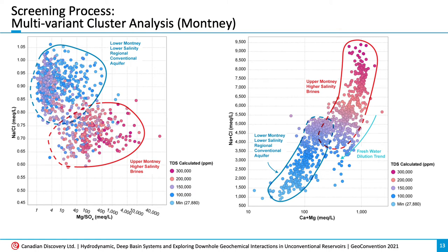Now we return to similar plots we've already looked at, but here the data is from the Motney. One of the main things I want to point out is how much less distinct these trends are in an unconventional reservoir. We can still separate out different groupings and identify a dilution trend line, but it is difficult to make too many more conclusions about these graphs. The sodium chloride ratio versus the magnesium sulfate ratio plot showed relatively strong trends in previous formations, but here the plot can only be grouped into two different clouds of data based on salinity, with no definitive trends observed. So how do we know what is frac fluid, or what is in-zone formation water versus out-of-zone formation water? These questions become more challenging with standard methods when we are working in the unconventional world.